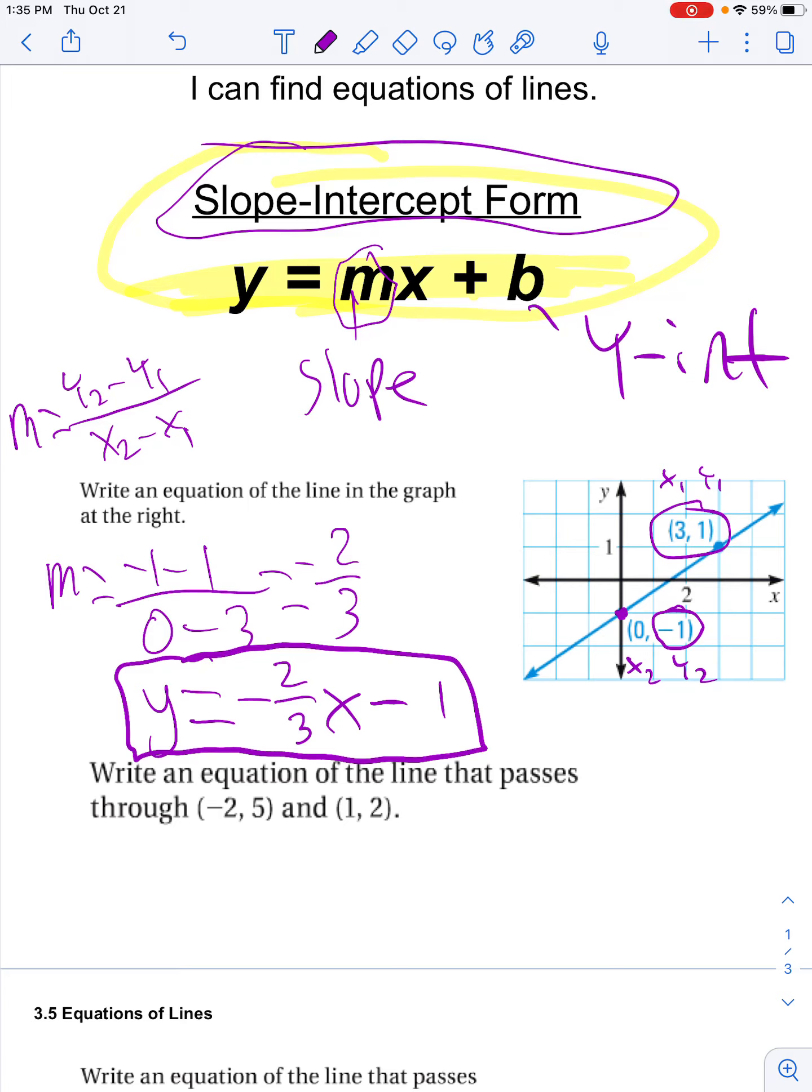Write an equation of the line that passes through negative 2, 5, and 1, 2. Okay, so again, for starters, let's start by calculating the slope. So my slope is going to equal 2 minus 5 over 1 minus negative 2, negative 3 over 3, which is negative 1.